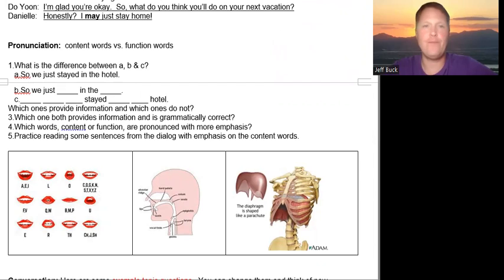Okay, and now the pronunciation, content words and function words. So, A, so we just stayed in the hotel. B, so we just in the. C, stayed hotel. So which ones, A, B, C, provide information and which ones do not? A, definitely. And B, no, not really. C, yes. Actually, down here. And there should be two. Which one provides information and is grammatically correct? A.